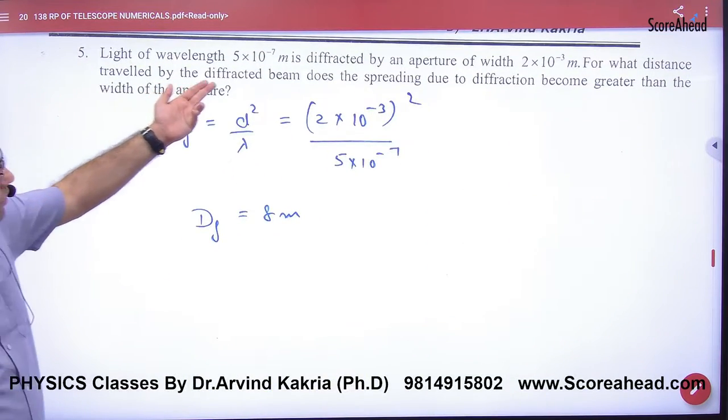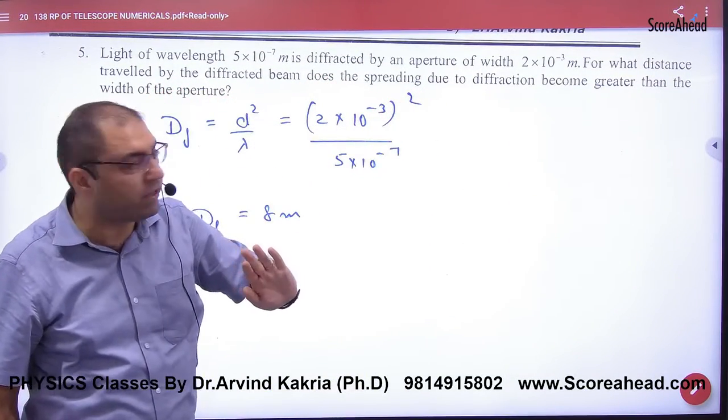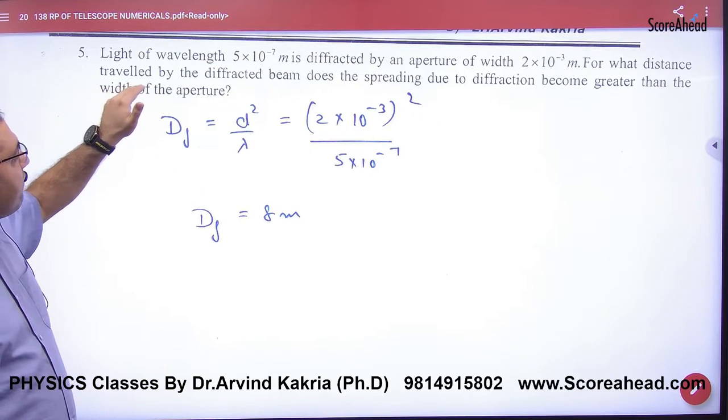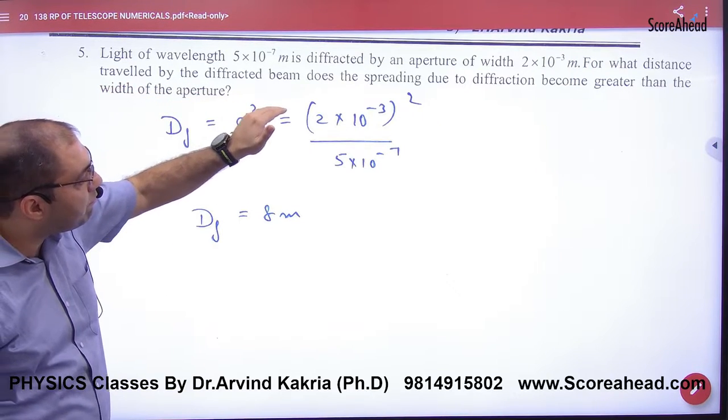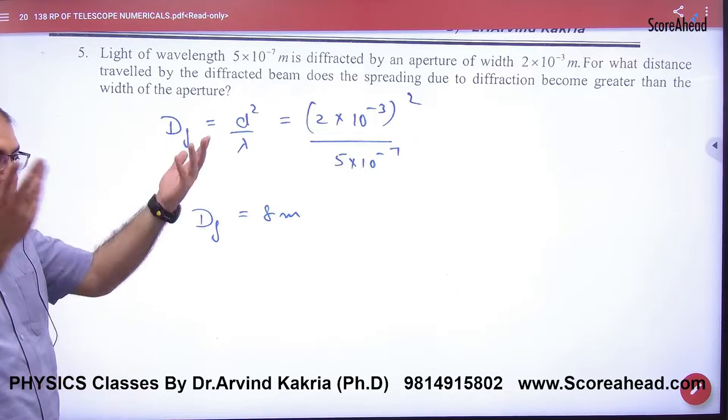Light of wavelength given, diffracted by aperture a given. For what distance traveled by the diffracted beam does the spreading due to diffraction become greater than the width of the aperture?